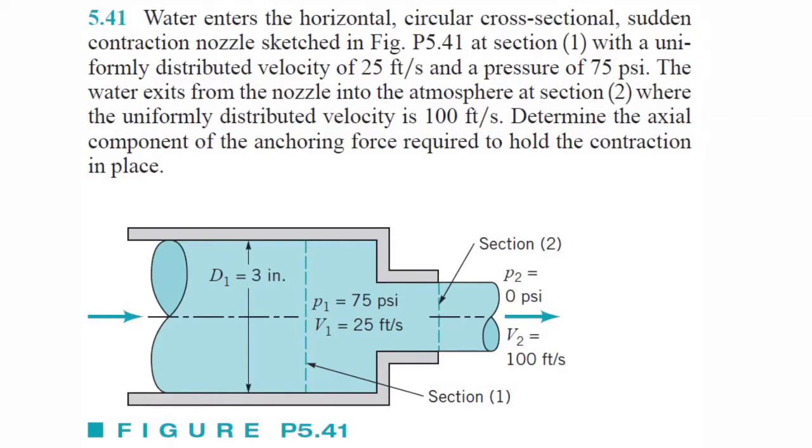All right, so what's going on everybody? We got problem 541. It says water enters the horizontal circular cross-sectional sudden contraction nozzle. It's a little crazy to read.